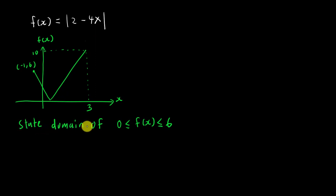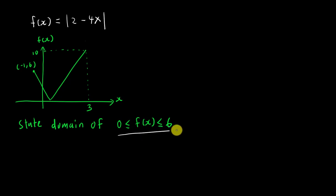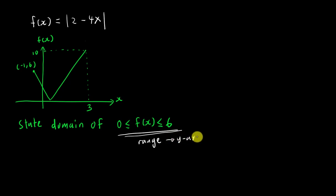This question asks you to state the domain of f(x). The range given is from 0 to 6. So the first thing you have to understand is that this information — 0 to 6 — is the range, which relates to the y-axis. If you've watched my previous video, you know the range is the range of the y-axis.